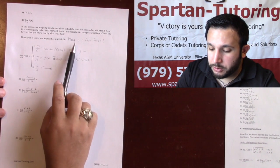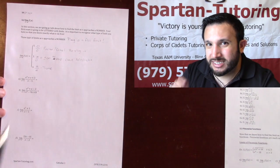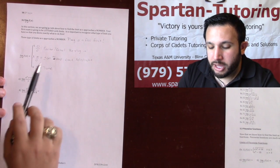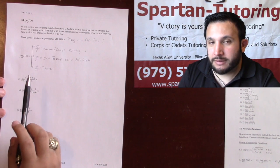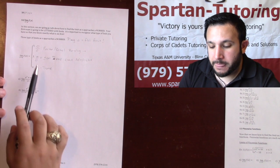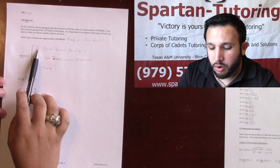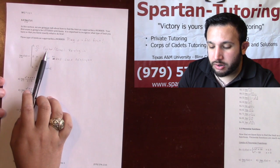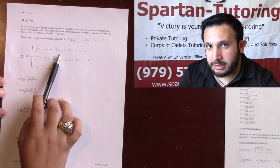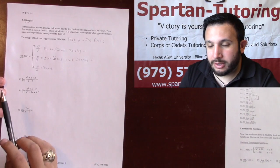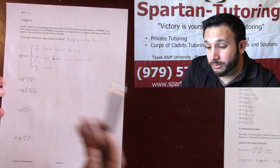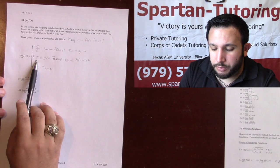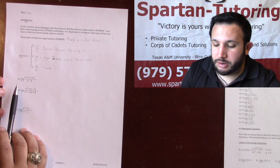Once you plug that number into f(x), that tells you exactly what to do. If you plug the number in and you get zero over zero, what you're going to do is factor, cancel, then replug that number back in after canceling.